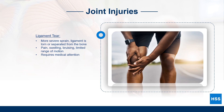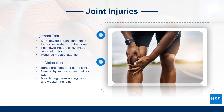A joint dislocation is the complete separation of the bones in a joint. This type of injury may be caused by a sudden impact, a fall, or a forceful twist of a joint. The signs and symptoms include a visible deformity of the joint, instability, and pain. When the bones separate, they may cause damage to surrounding tissues such as ligaments, tendons, and cartilage. Joint dislocation requires medical attention to ensure the joint is properly realigned.